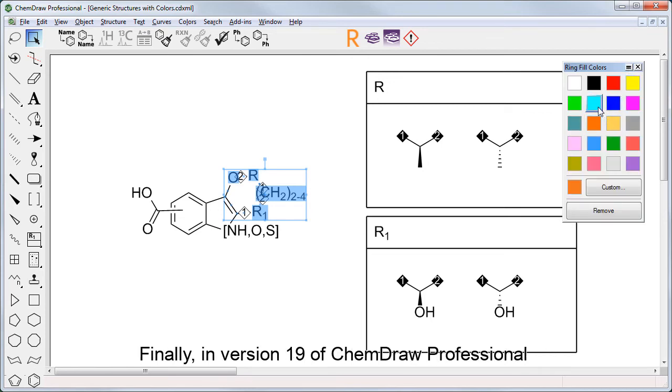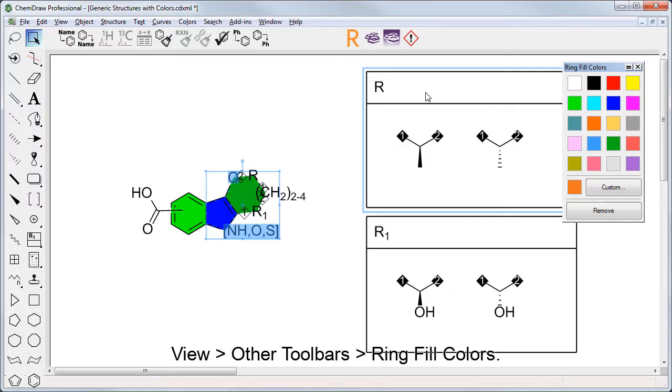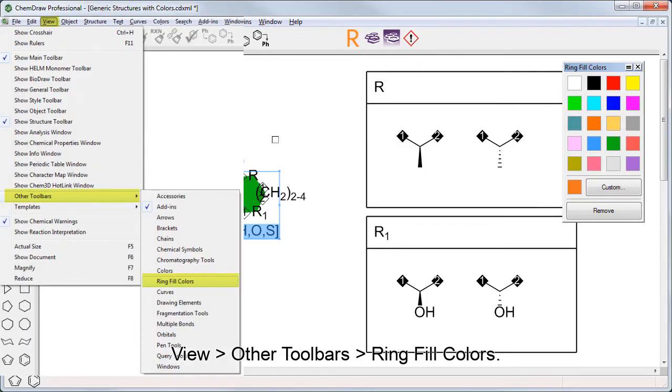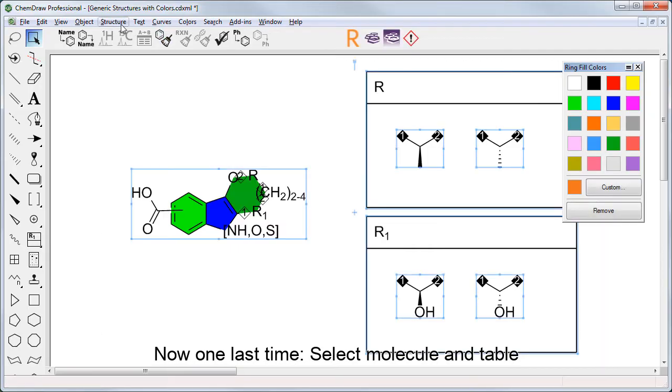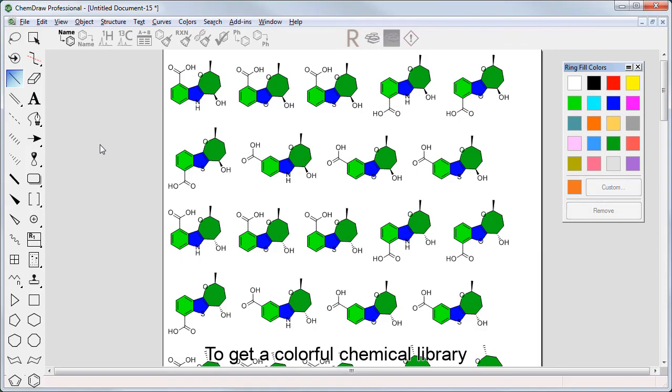Finally, in version 19 of ChemDraw Professional, as we have seen, you can select any carbon cycle and fill it with the color of your choice. The toolbar is accessible in View, Other Toolbars, Ring Fill Colors. Now, one last time, select Molecule and Table, go to Structure, Expand Generic Structure, and we get a colorful chemical library.